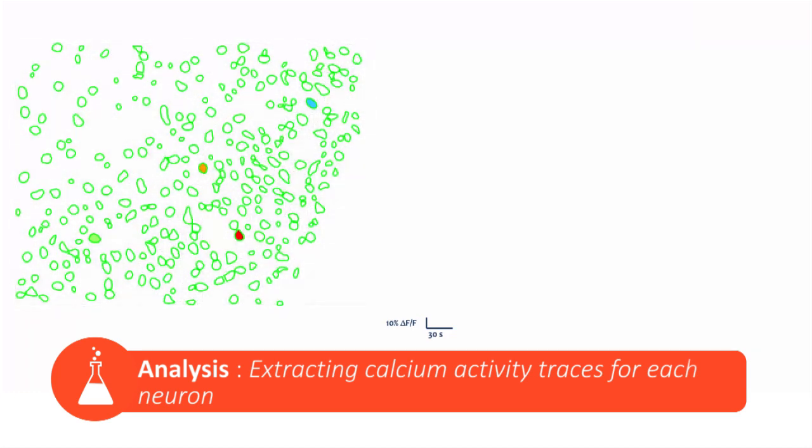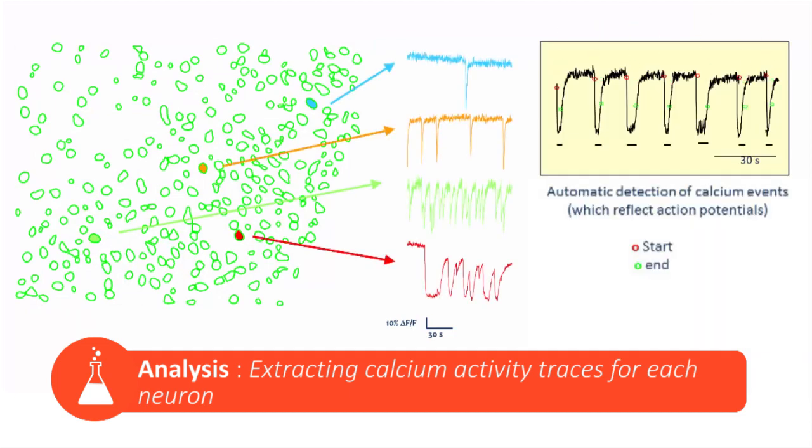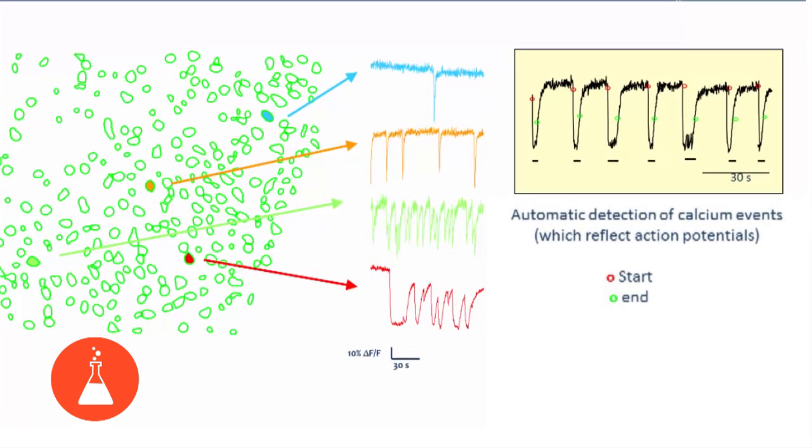This program enables us to trace the shape of each of the neurons. The shapes of the neurons are associated with their natural variation in calcium fluorescence over time.